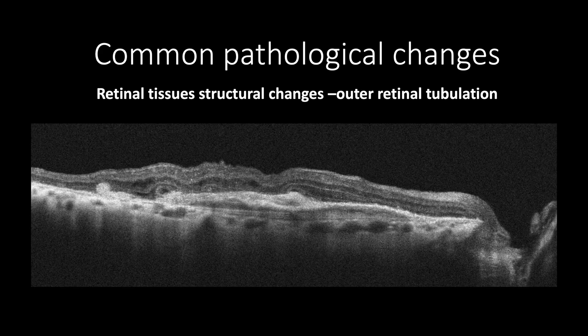Outer retinal tubulation forms a channel of enclosed photoreceptor dead cells, which appear as a circular lesion in the outer retinal tissue with hyperreflective borders that resemble enclosed photoreceptors and contain hypo- and hyperreflective material that may resemble dead RPE cells. Outer retinal tubulation shouldn't be mistaken with intraretinal cysts and doesn't indicate an active choroidal neovascular process nor require any treatment. This cross-section shows outer retinal tubulation along with intraretinal cysts, a subretinal scar, and pigment epithelial detachment.